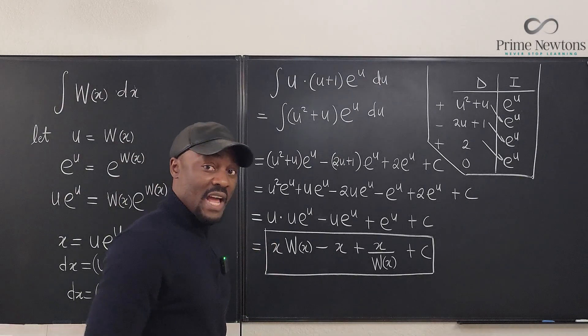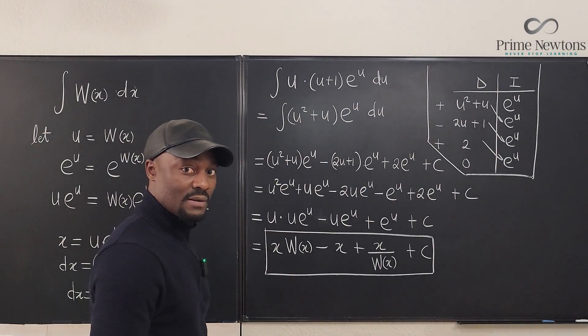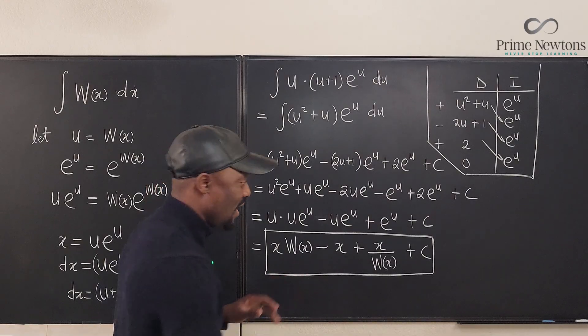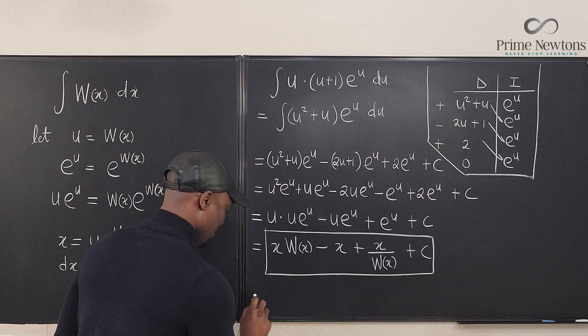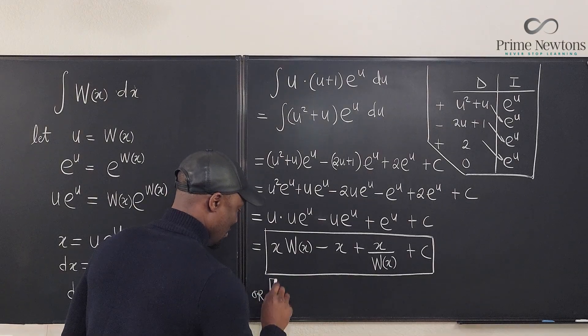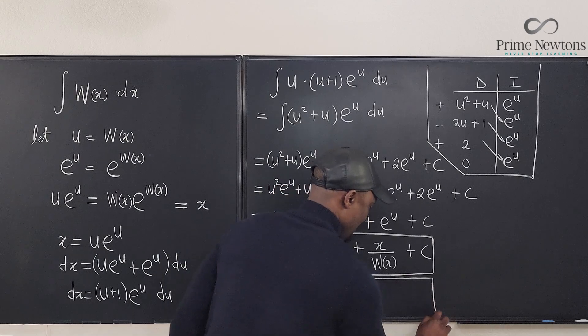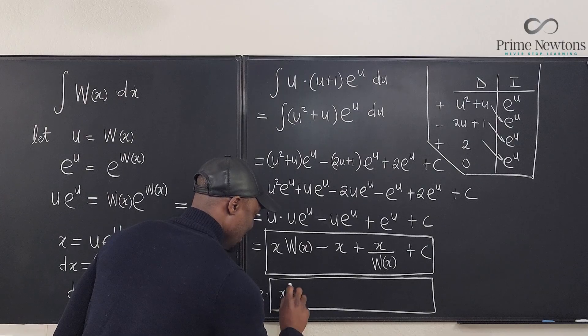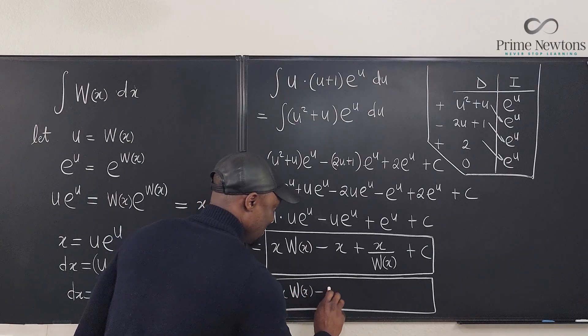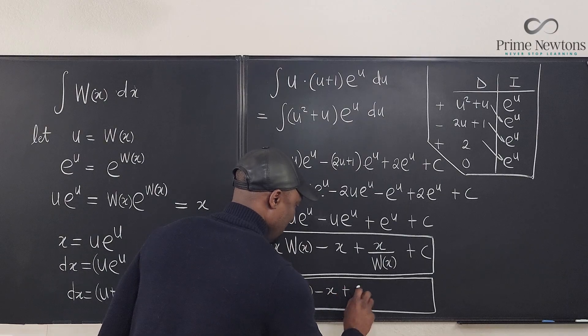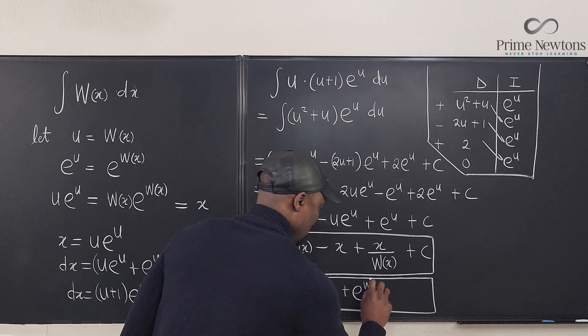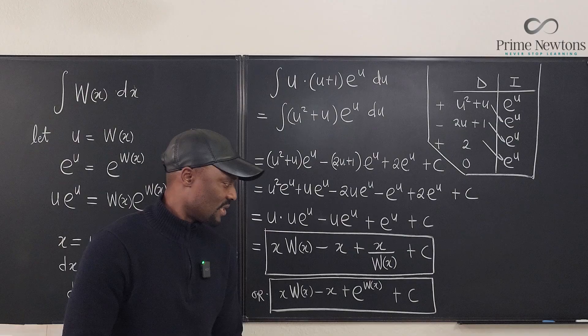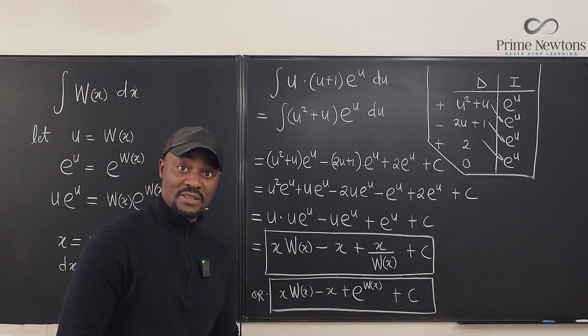Now, some of you may not like this answer because you don't see e to the X there. So you might as well write the other version. There are actually three or four versions of this answer, but we can just box something here and say that this integral is equal to X W of X minus X plus e to the W of X plus c. This looks cleaner actually, but it has e of X, which is a different function.